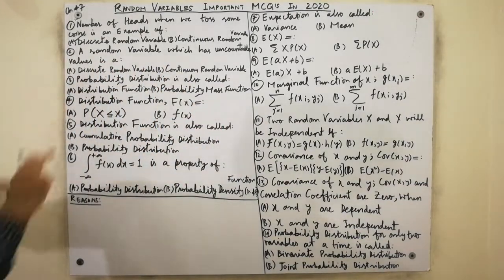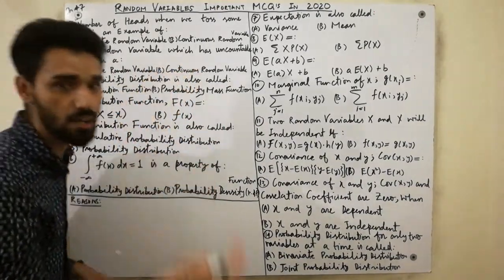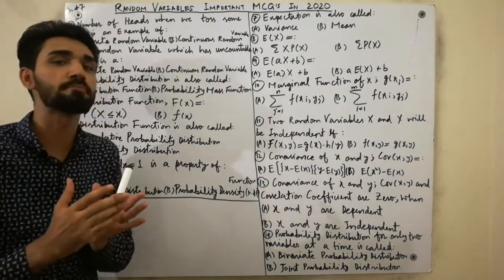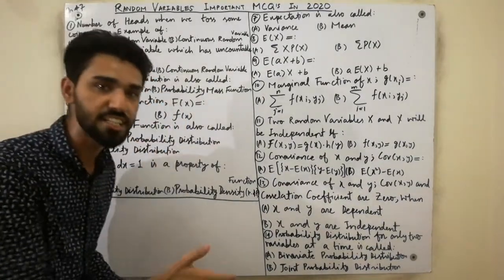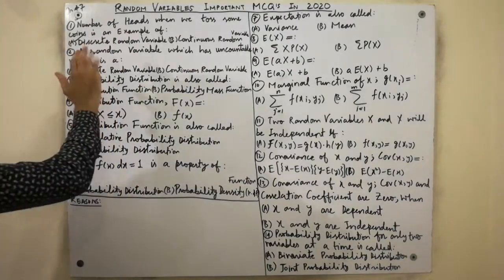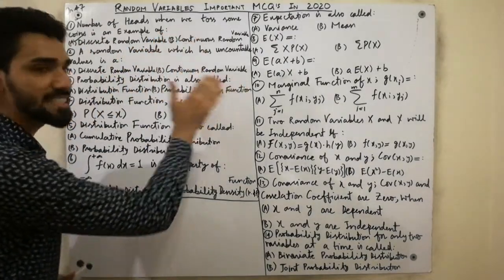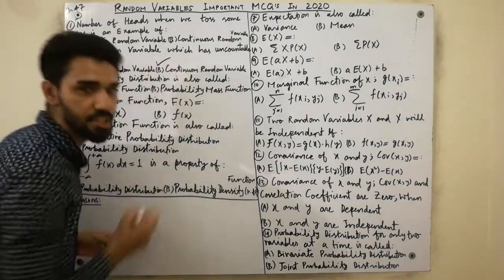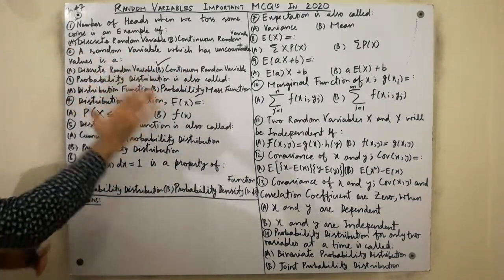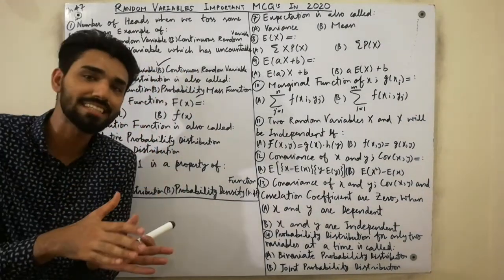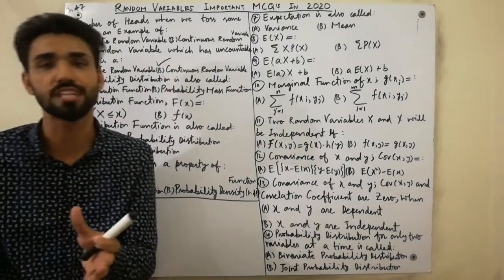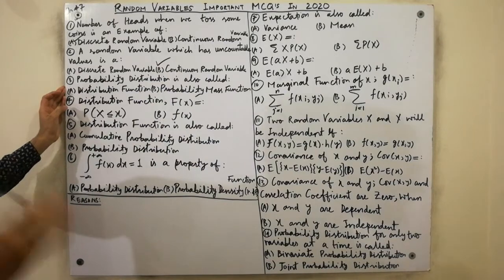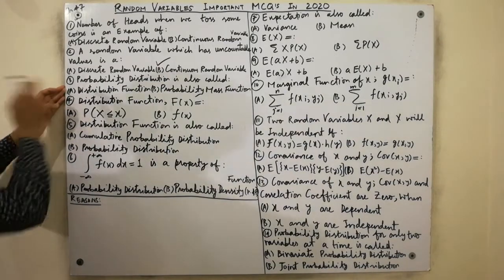The second MCQ: a random variable which has an uncountable number of values is called a continuous random variable. I hope you now have a clear perception of what a discrete random variable is and what a continuous random variable is.